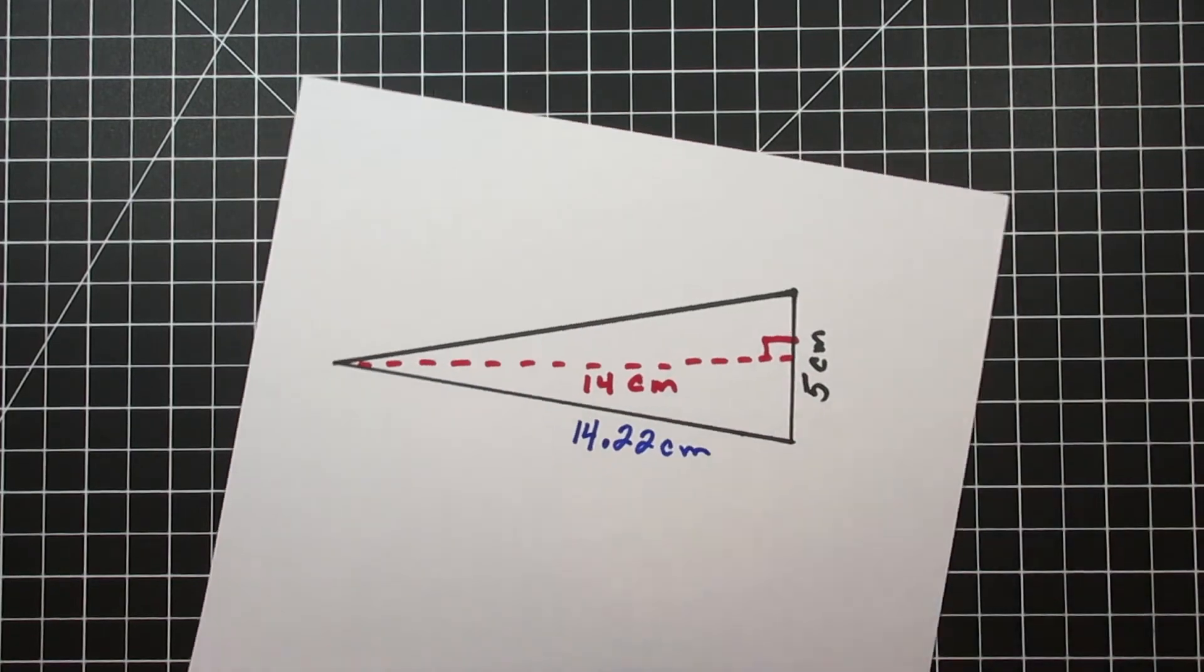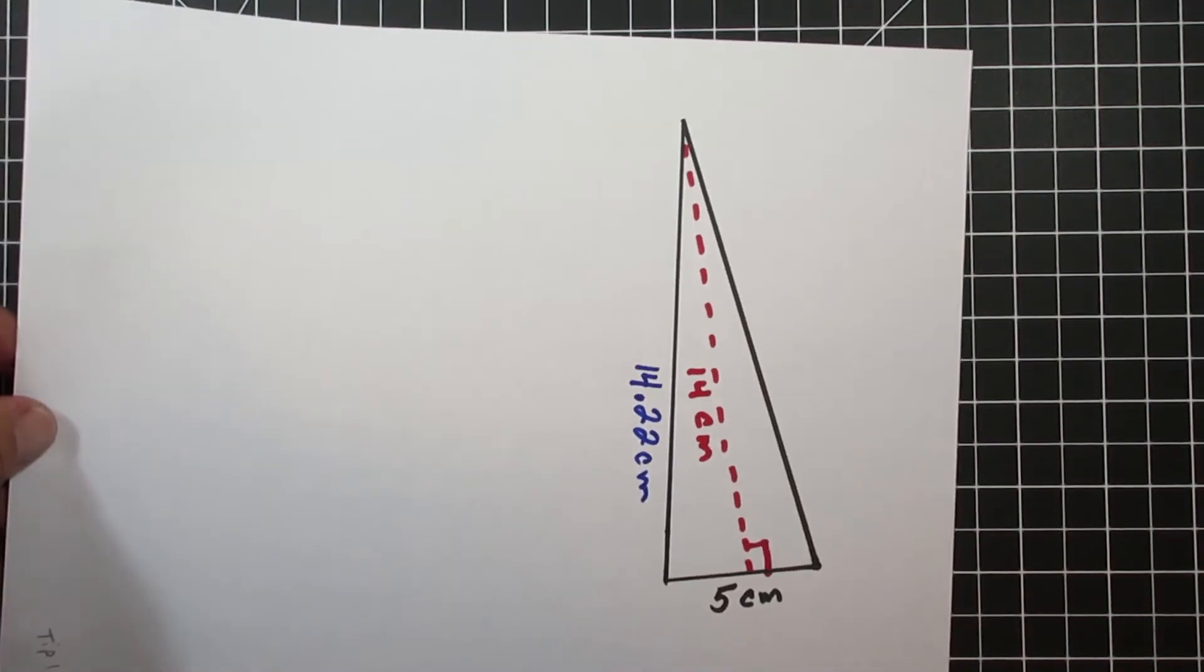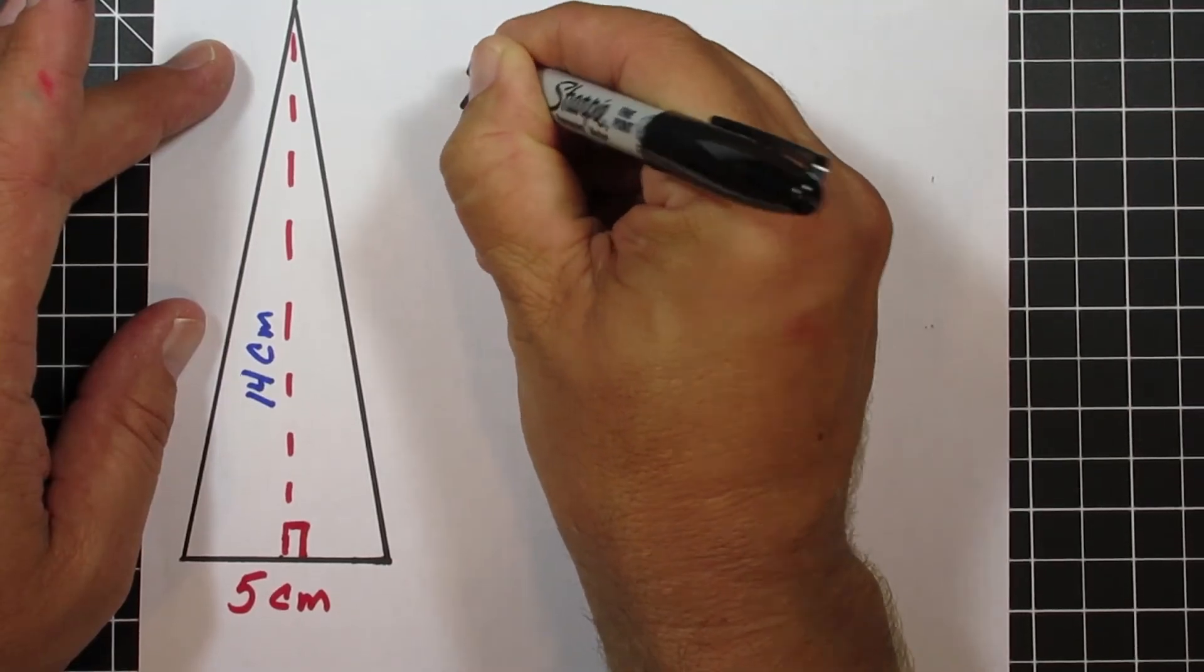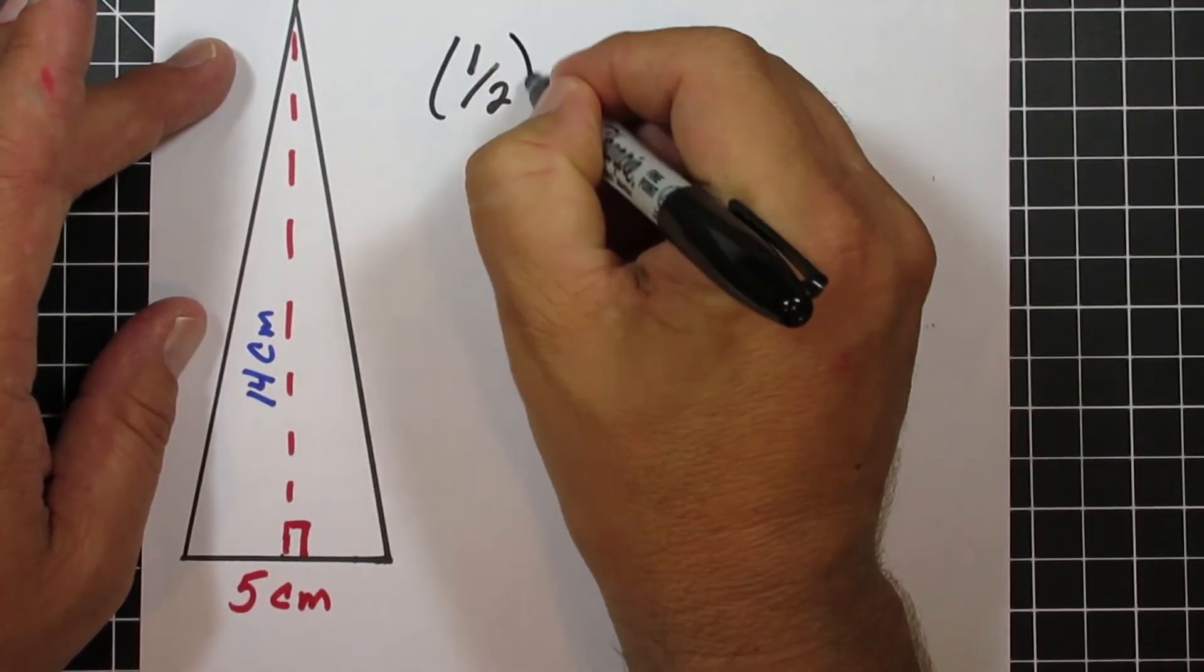Here are a couple tips to make finding the area of a triangle simpler. Can't find the base and the height? Just turn your paper, and a lot of times you can find it real easy.